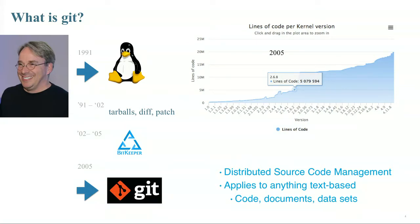That proved unwieldy after some time and they adopted BitKeeper, which was a distributed source code management system. They lost their rights to use BitKeeper around 2005, and as the story goes, Linus invented Git over a weekend. Git basically solves the problem of distributed source code management, and it can apply to anything that's text-based, whether it's code, documents, or even data sets.